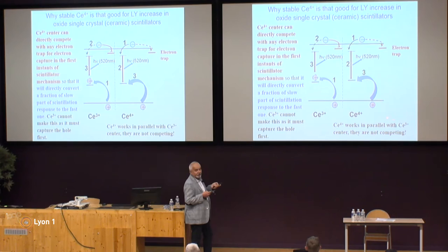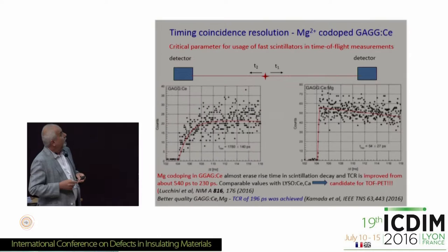We distinguished two interesting regimes for application. At low-level magnesium codoping of the order of a few hundred ppm, you optimize light yield — at these micro-pulling-down crystals we got more than 23,000 photons per MeV, which for LUAG garnet is a lot of light. High-level codoping makes the scintillation response extremely fast. The critical point is that Cerium 4+ can compete with electrons from the very first picosecond of the scintillation cycle with any kind of electron trap. The unresolved question — technologically dependent — is what should be the proportion in the sample between stable Cerium 3+ and Cerium 4+, because you need both.